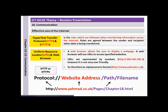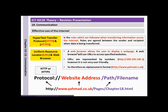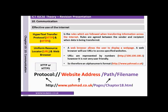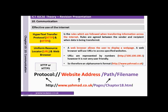A URL — Uniform Resource Locator — allows the user to directly display a web page. A browser uses URLs to access specific websites. URLs are represented by numbers, however that's not very user friendly, so an alphanumeric format is used instead. For example, a website address would be http://www.yacma.co.uk.